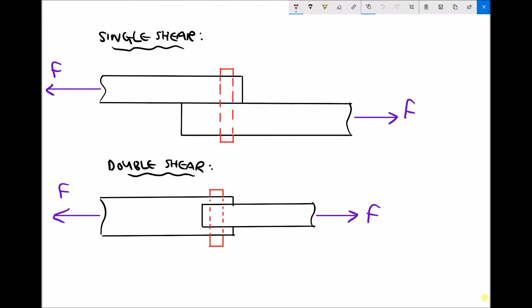If we begin by looking at single shear, the diagram at the top, then the object that's being sheared is the red pin in the centre. And for the purpose of this example we're going to assume that that pin is circular and it has an area as shown there.